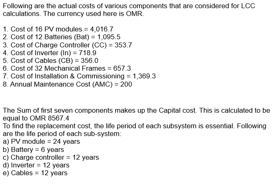Information is given about how many panels are used and so on. The cost of the PV panels — 16 panels — is given in a certain amount in Omani rials. Also given are the cost of 12 batteries, charger controller, inverter, cable, frame, and cost of installation, commissioning, and maintenance. The capital cost, representing all these costs excluding annual maintenance, is found to be 8,567.4 Omani rials.